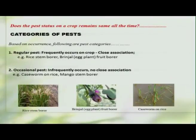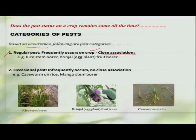First of all, pests can be categorized based on their occurrence. We can categorize them as regular pests — these pests will regularly occur on a particular crop and they will have a very close association. For example, the rice stem borer or the fruit borer in case of brinjal. Whenever you grow these crops, these pests are bound to occur, indicating their closer association with the crop.